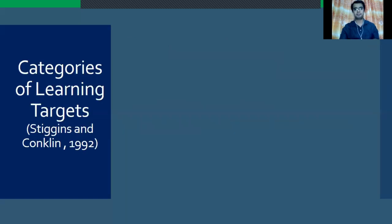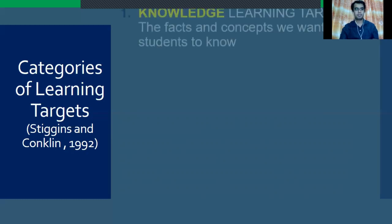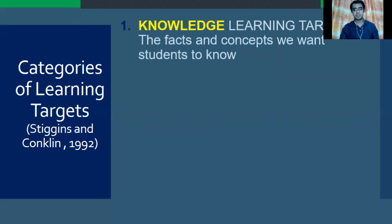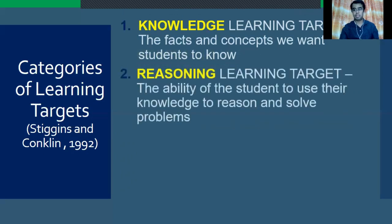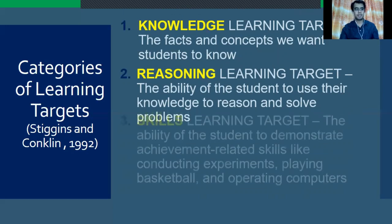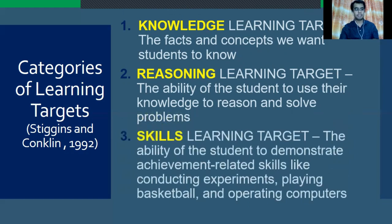Here are the categories of learning targets according to Stiggins and Conklin in 1992. Number 1: Knowledge Learning Target — these are the facts and concepts we want students to know. Number 2: Reasoning Learning Target — the ability of students to use their knowledge to reason and solve problems. Number 3: Skills Learning Target — the ability of students to demonstrate achievement-related skills like conducting experiments, playing basketball, and operating computers.